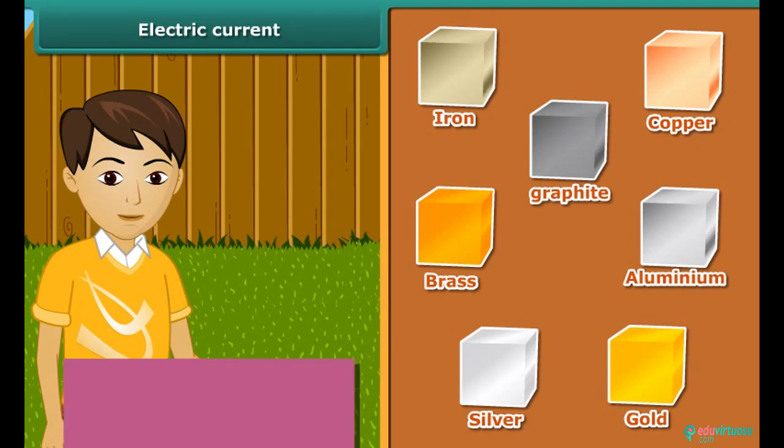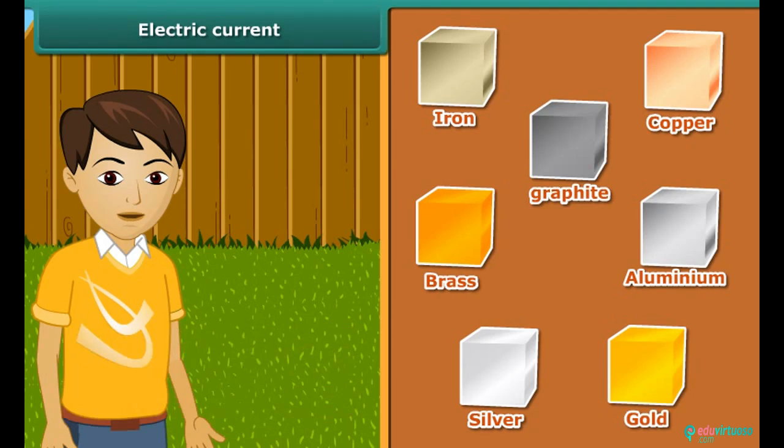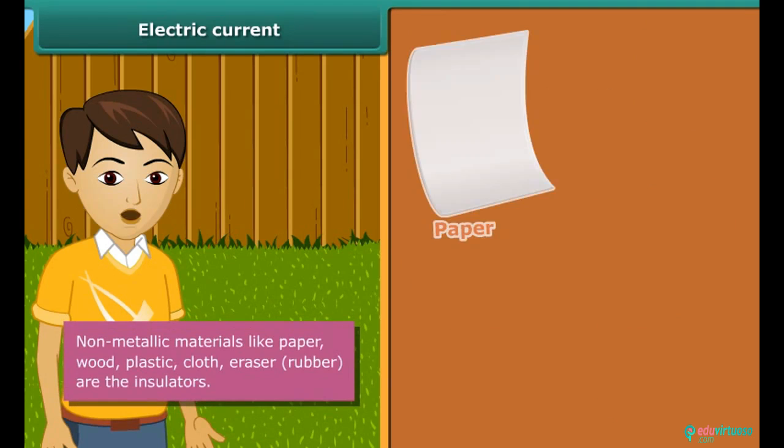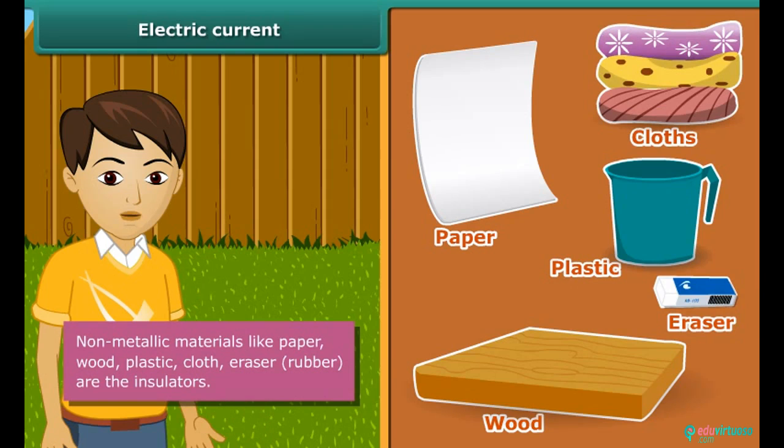The materials through which electric current doesn't flow are called insulators. Insulators are also known as non-conductors of electricity. Paper, wood, plastic, cloth, eraser, and rubber are the insulators.